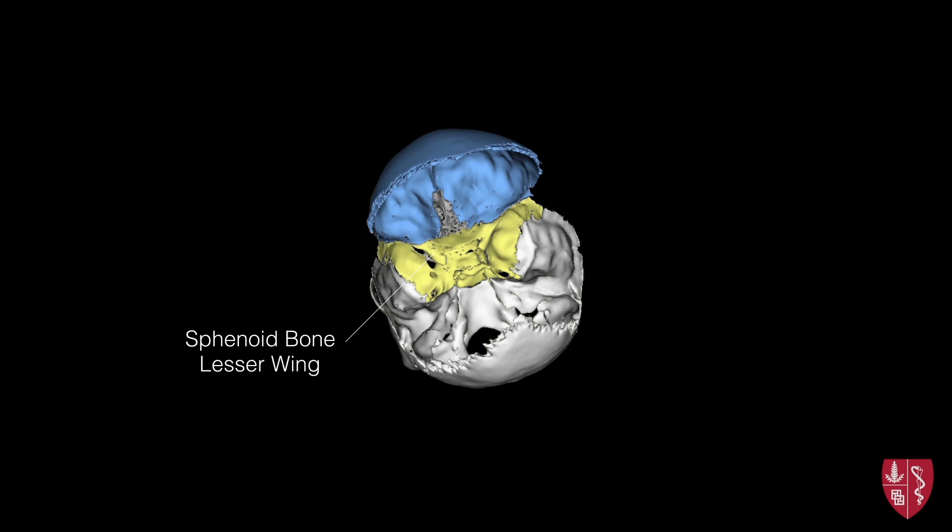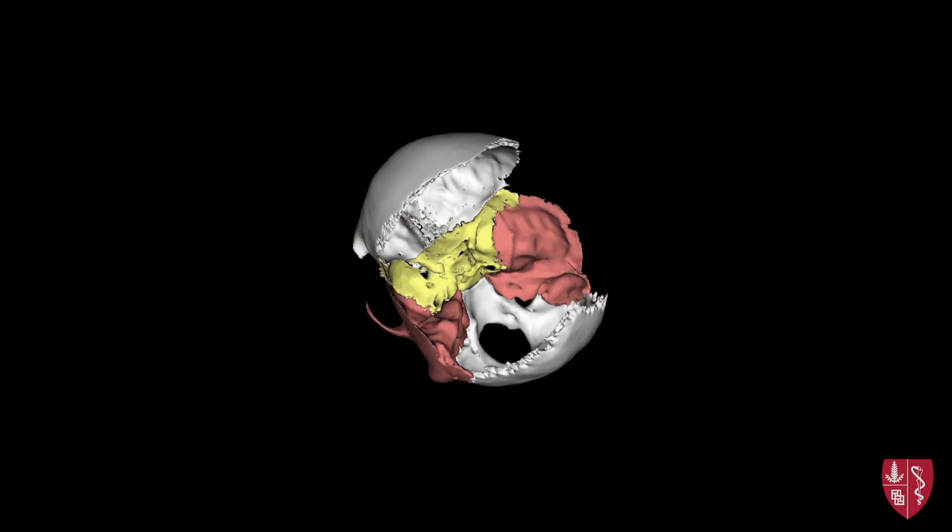The middle cranial fossa consists of the greater wing of the sphenoid bone, as well as the temporal bone's petrous portion, extending into the cranial cavity.